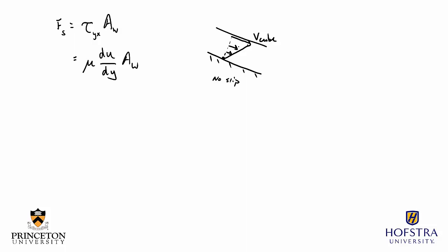The velocity distribution within the SAE oil is now shown. The velocity gradient is just the slope of this line, which is a constant. Therefore the derivative du/dy equals a single constant number, calculated as the change in u over the change in y — valid only because the distribution is linear.